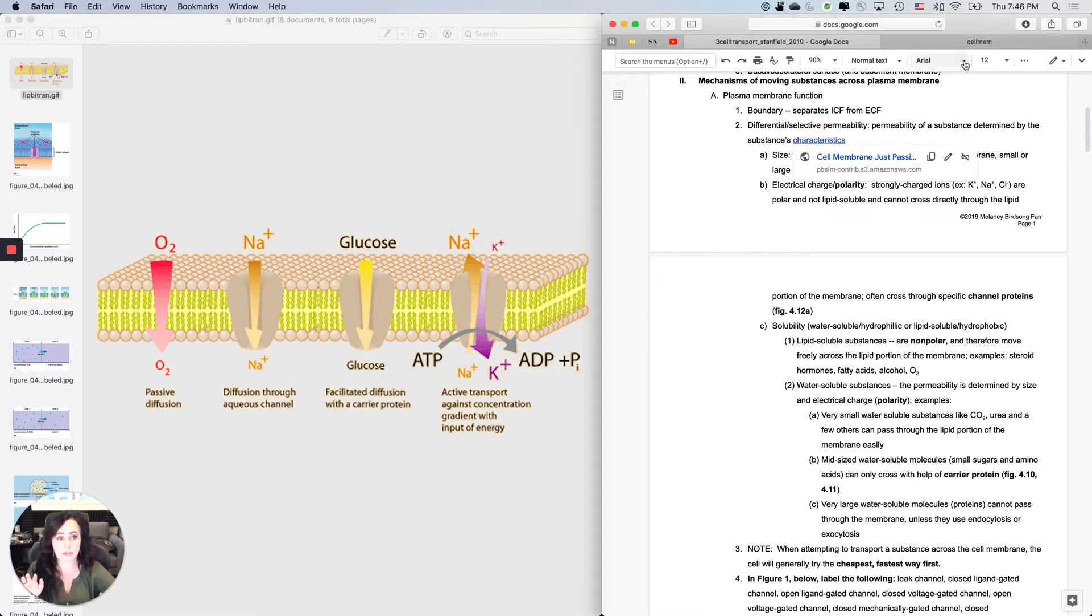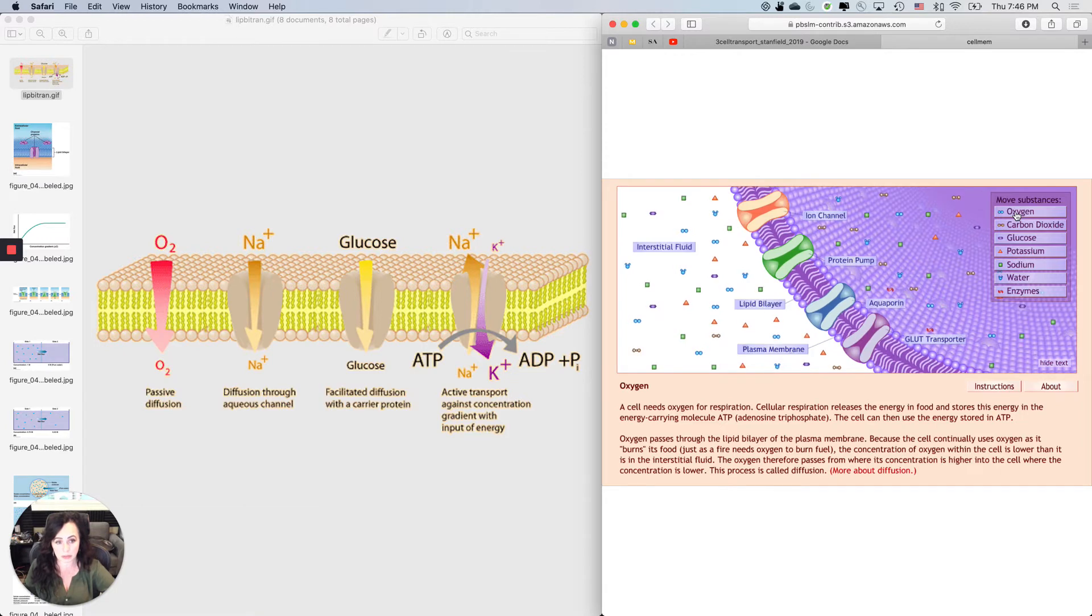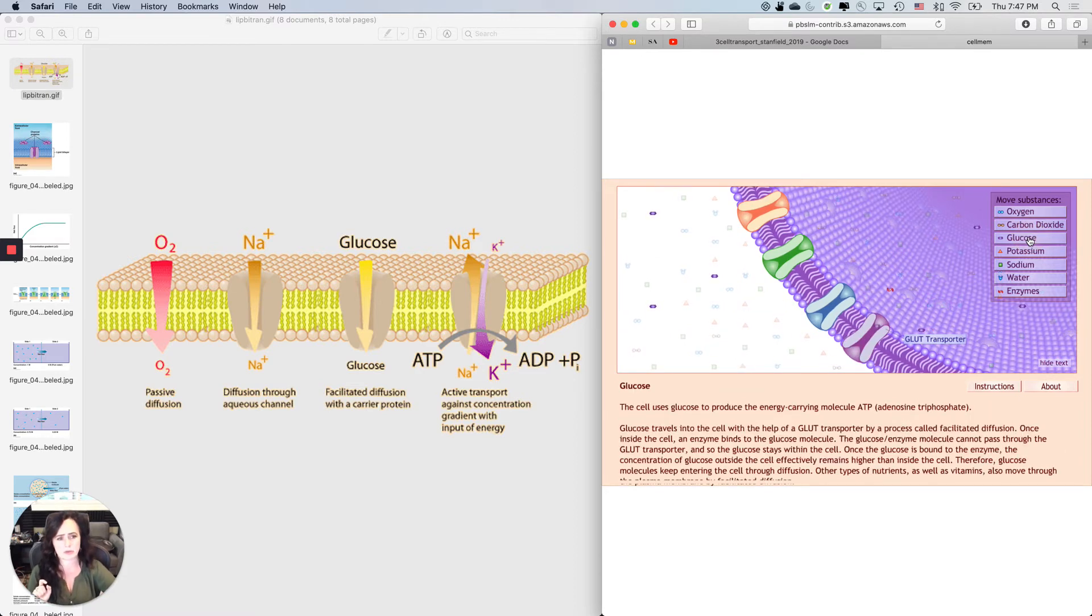There's this really cool interactive animation that I've got linked in your notes. It shows you how oxygen is going to be transported. It tells you about oxygen and a little bit more about diffusion. Can I transport glucose the same way as oxygen? No, glucose is going through this transporter. We're going to get to why oxygen can get straight through the cell membrane and glucose can't, why some things need protein pumps or channels.